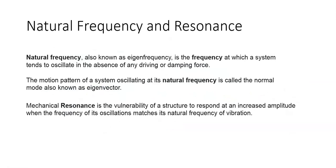Natural frequency, also known as eigenfrequency, is the frequency at which a system tends to oscillate in the absence of any driving or damping force. The motion pattern of a system oscillating at its natural frequency is called the normal mode, also known as eigenvector. If you know the natural frequency of a structure, you would be able to avoid mechanical resonance — the vulnerability of a structure to respond at increased amplitude when the frequency of its oscillations matches its natural frequency.